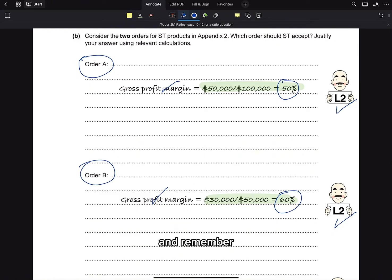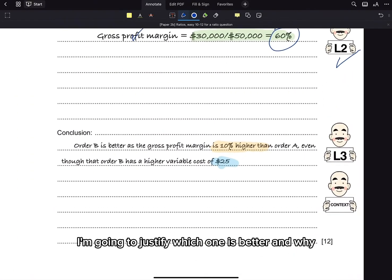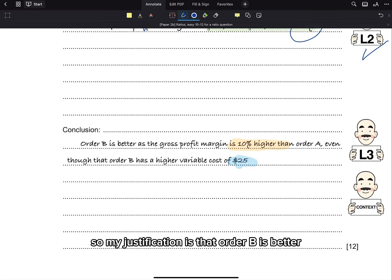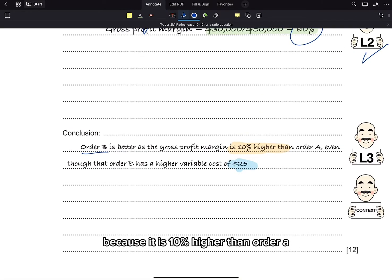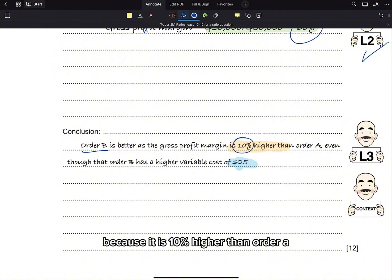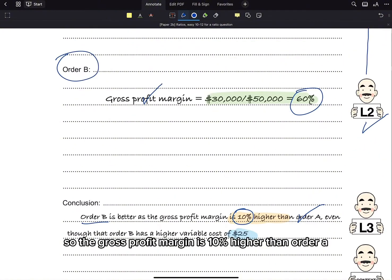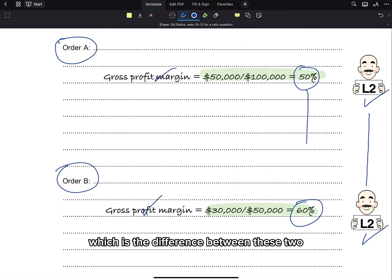And remember, that two level 2 answers will get me access to level 3. So what I'm going to do is justify which one is better and why. So my justification is that order B is better because it is 10% higher than order A. So the gross profit margin is 10% higher than order A, which is the difference between these two.